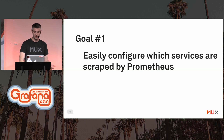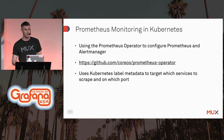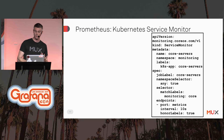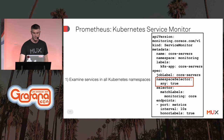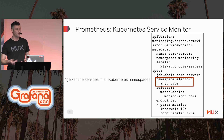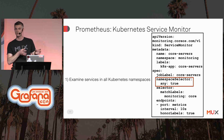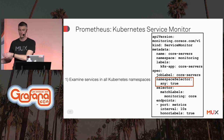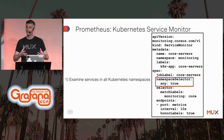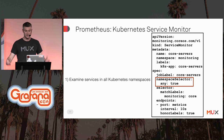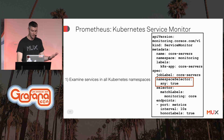For goal number one — easily configuring services for scraping by Prometheus — we use the Prometheus Operator from CoreOS, which makes it extremely easy to configure Prometheus for discovering services that need to be scraped. Here's a view of the Kubernetes ServiceMonitor. First, you configure the namespace selector. We have different Kubernetes namespaces for every cluster we operate — production namespaces like gc-us-east-1-production, and developers typically deploy to the default namespace locally. So we just have it look at all namespaces in the cluster for scrapeable services.